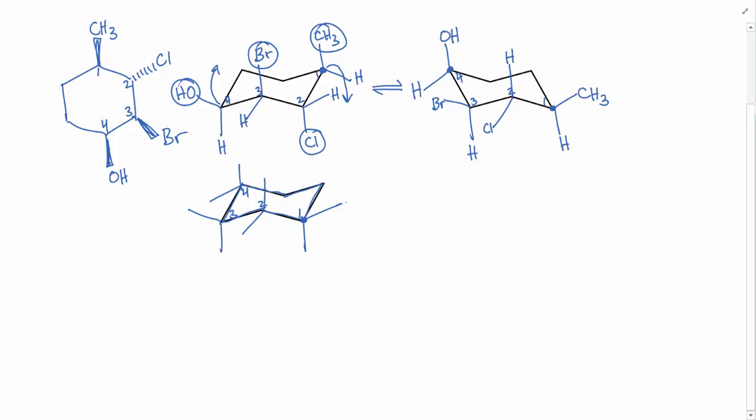Now, at number 1, CH3 has to go up, so it's this equatorial position. At number 2, Cl has to go down, so it is here. At number 3, Br has to go up. It's a wedge, and so it goes in the equatorial position. And here at number 4, the OH is going up, and so it ends up in the axial position here.